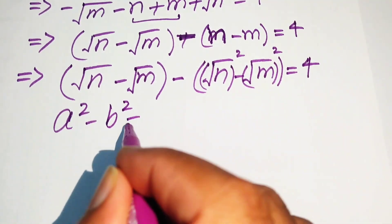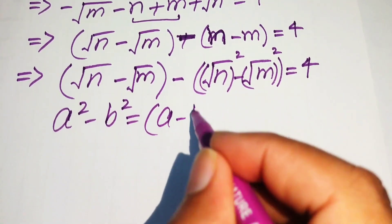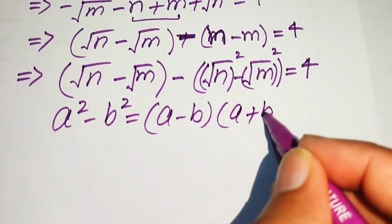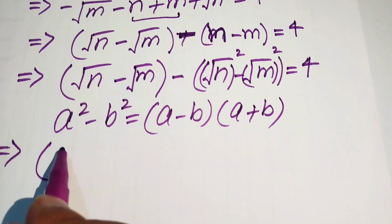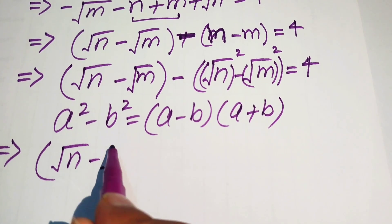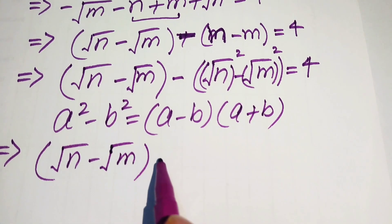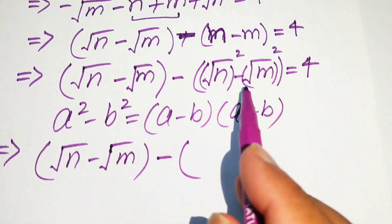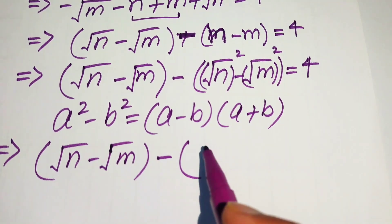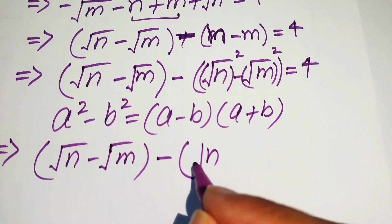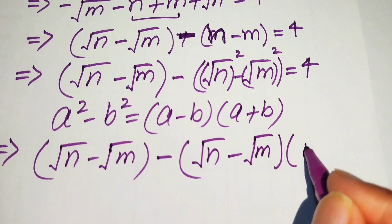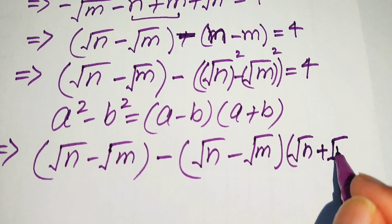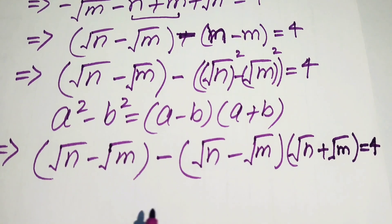Using the identity a squared minus b squared equals (a minus b)(a plus b), we apply it to the term (square root of n minus square root of m). This gives us: (square root of n minus square root of m) times (square root of n plus square root of m) equals 4.